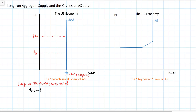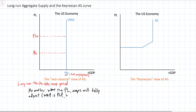Therefore, no matter what the price level in the economy, wages will be perfectly flexible and adjust to the average price level, allowing firms to produce the same amount of output — that full employment level of output — no matter what the price level is. Wages will rise if the price level rises; wages will fall if the price level falls. The result is that firms will always employ the same number of workers and output will always be the full employment level.